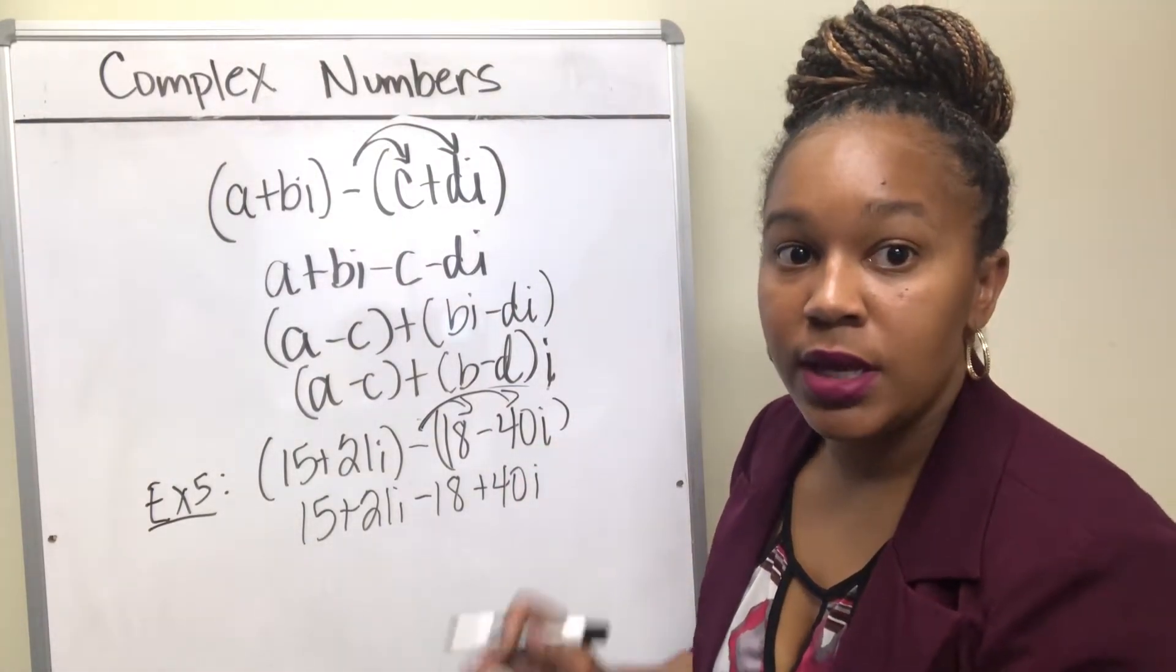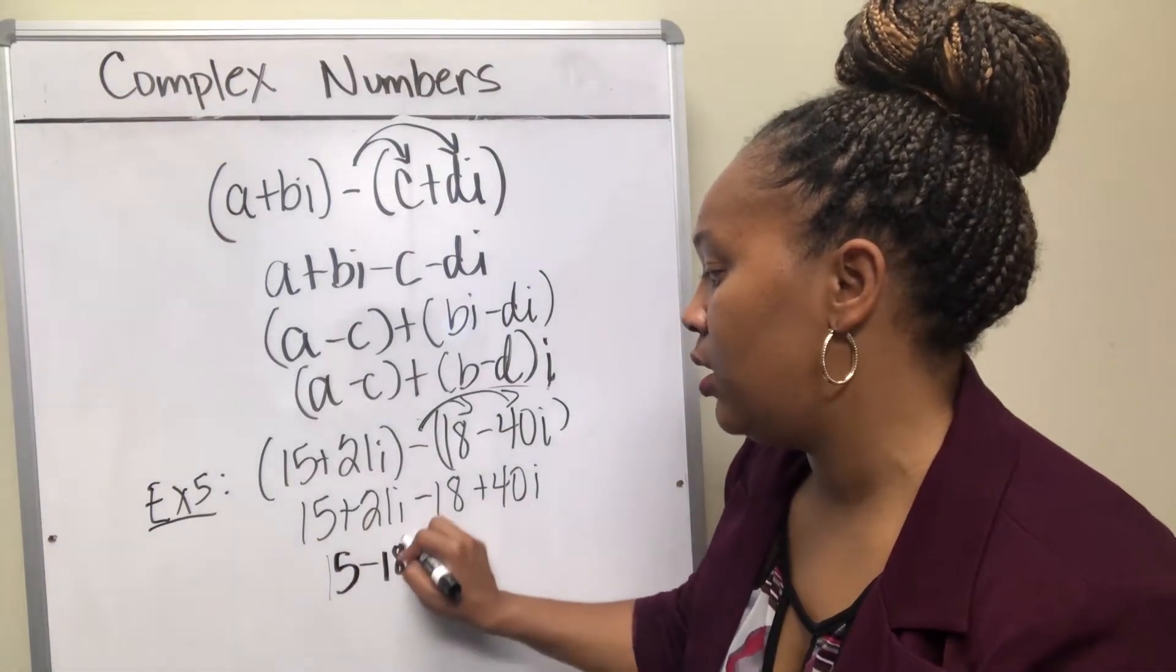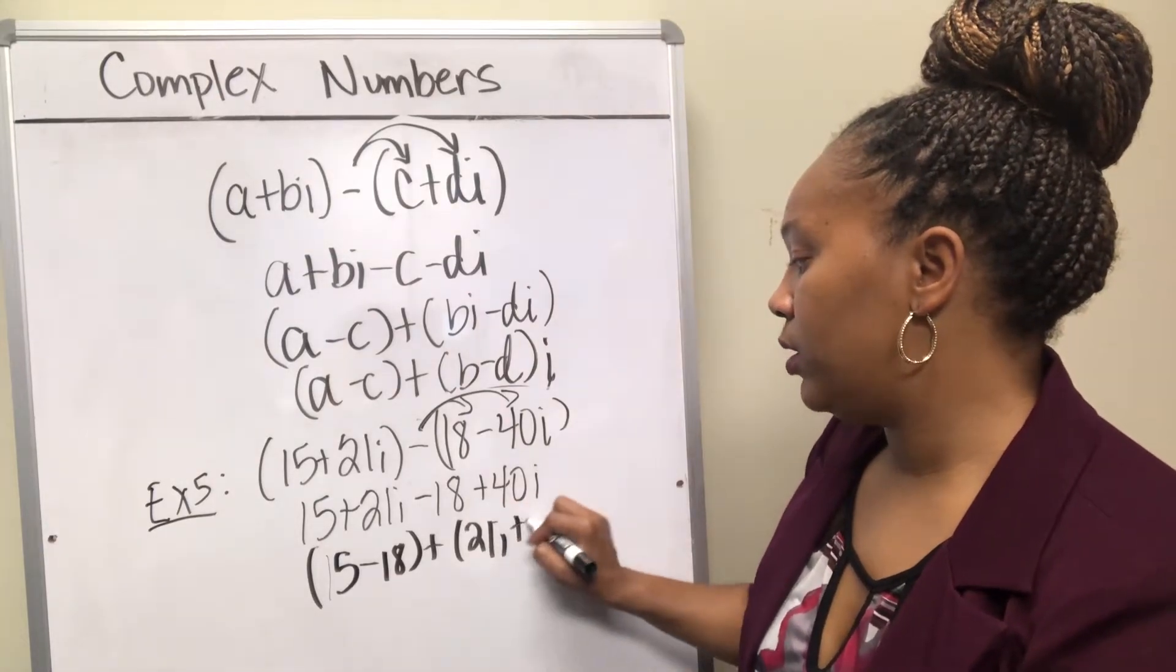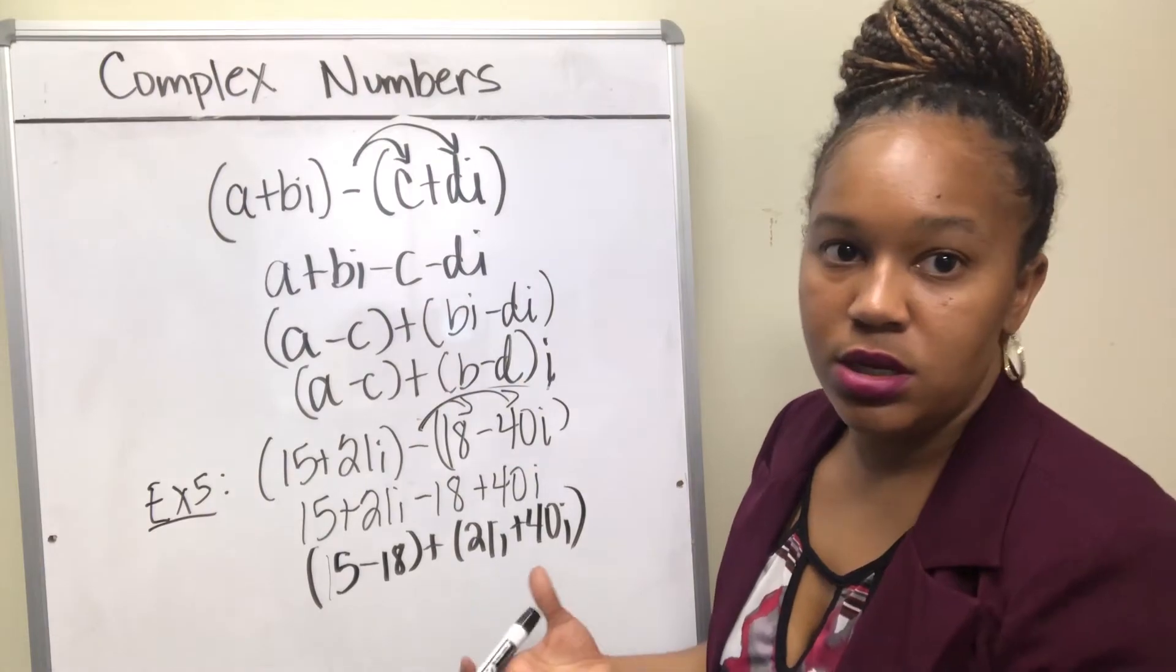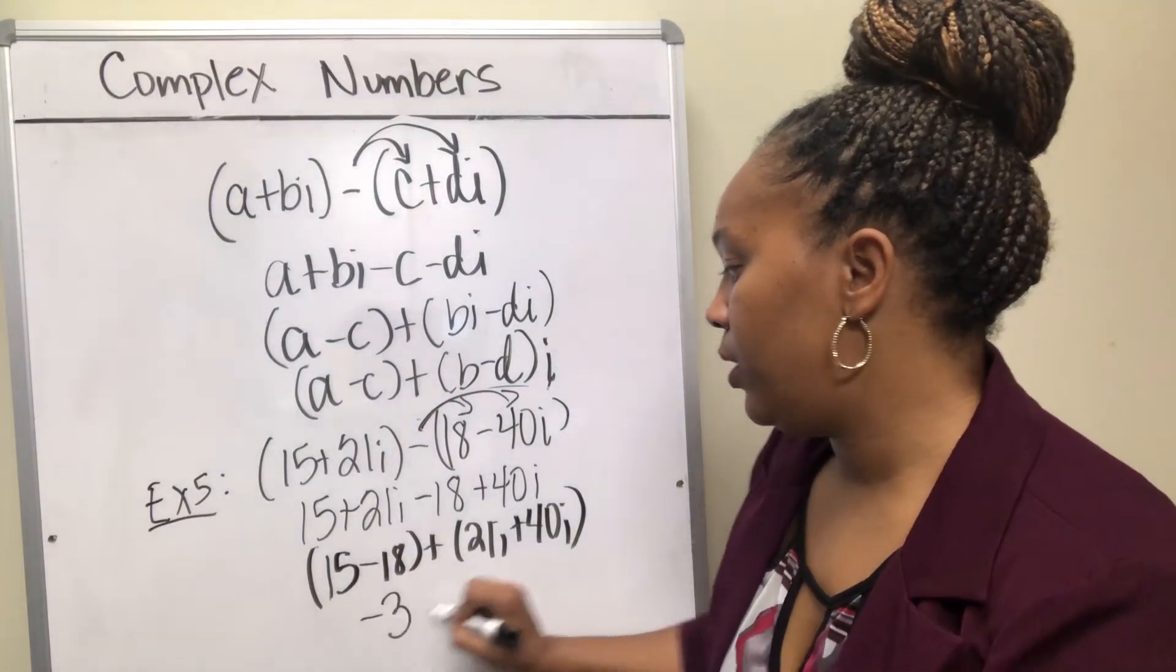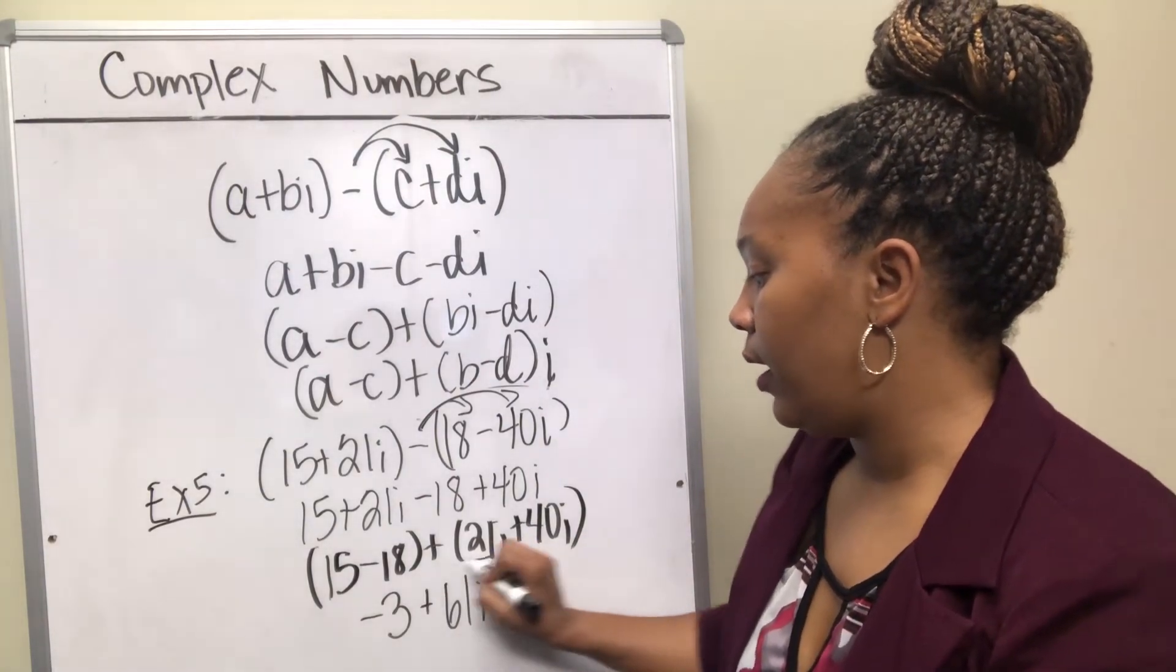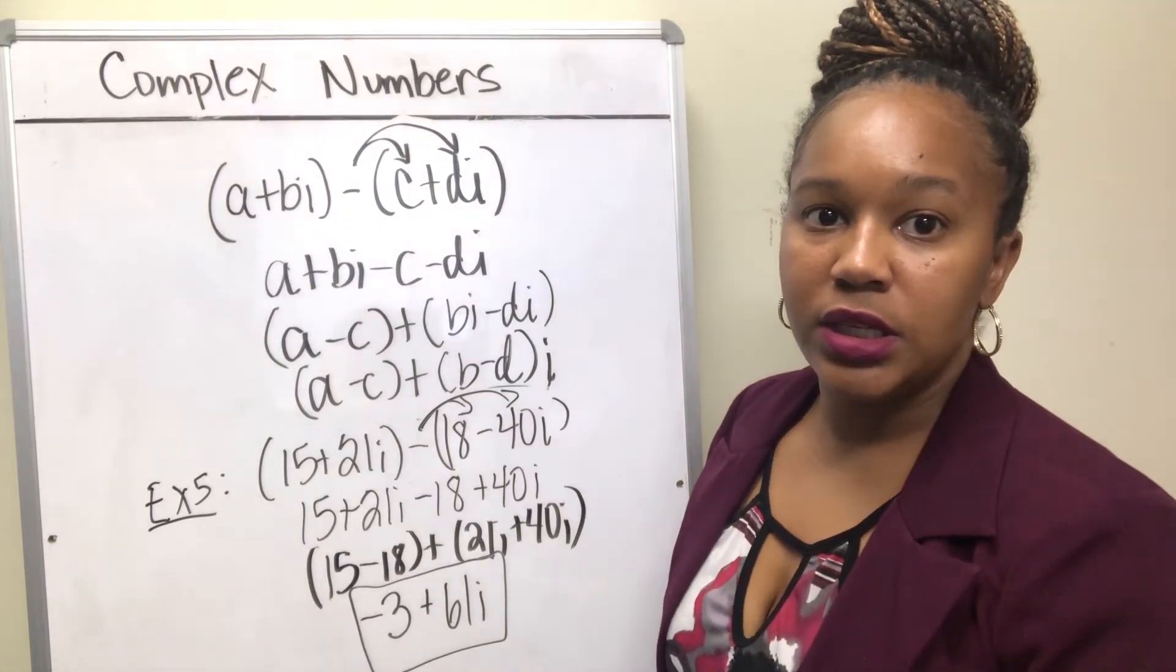Then you combine your real parts and you combine your imaginary parts. So 15 minus 18 are the real parts, and 21i plus 40i are the imaginary parts. Then you just simplify them: 15 minus 18 is negative 3, and 21 plus 40 is 61i. So your final answer would be negative 3 plus 61i.